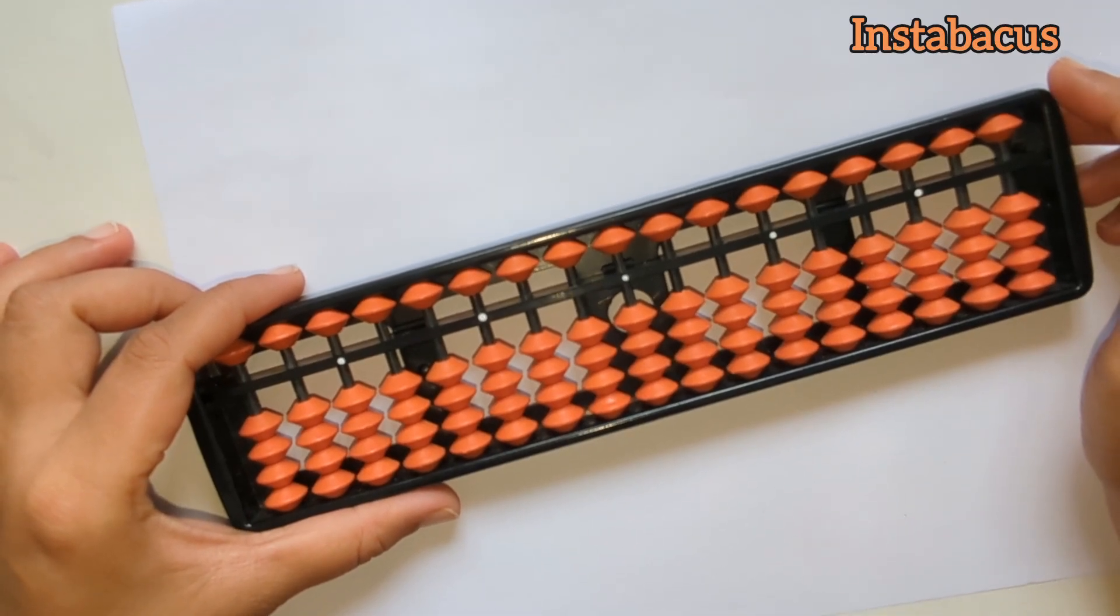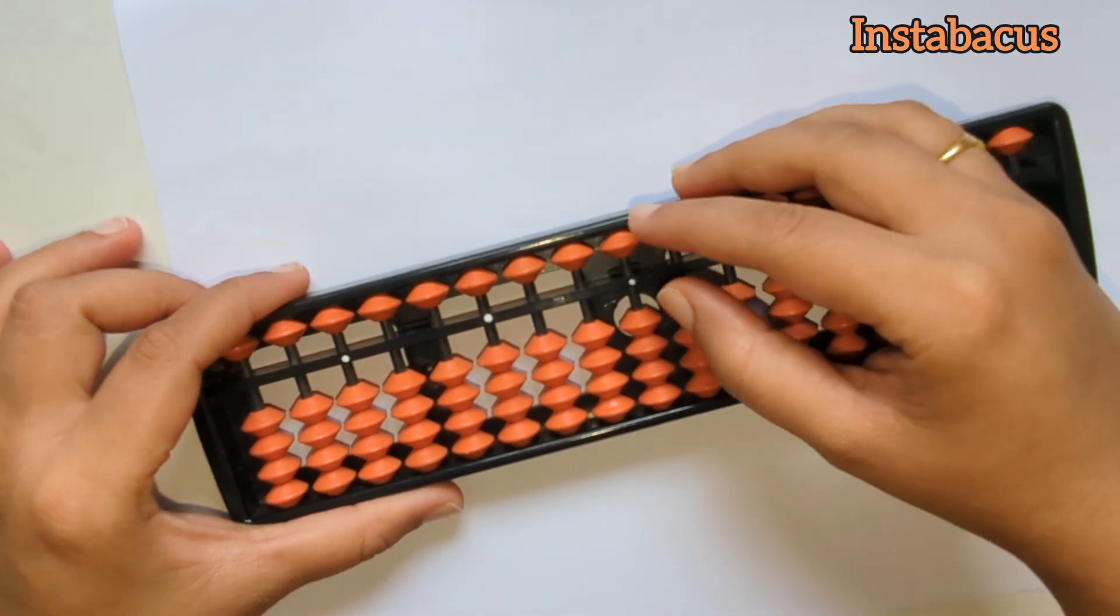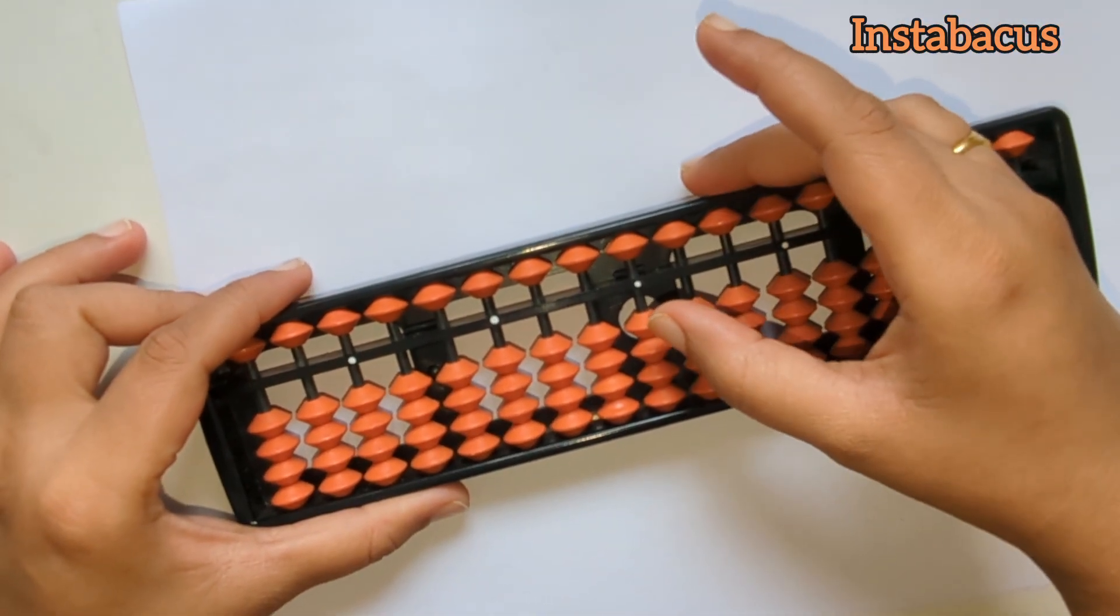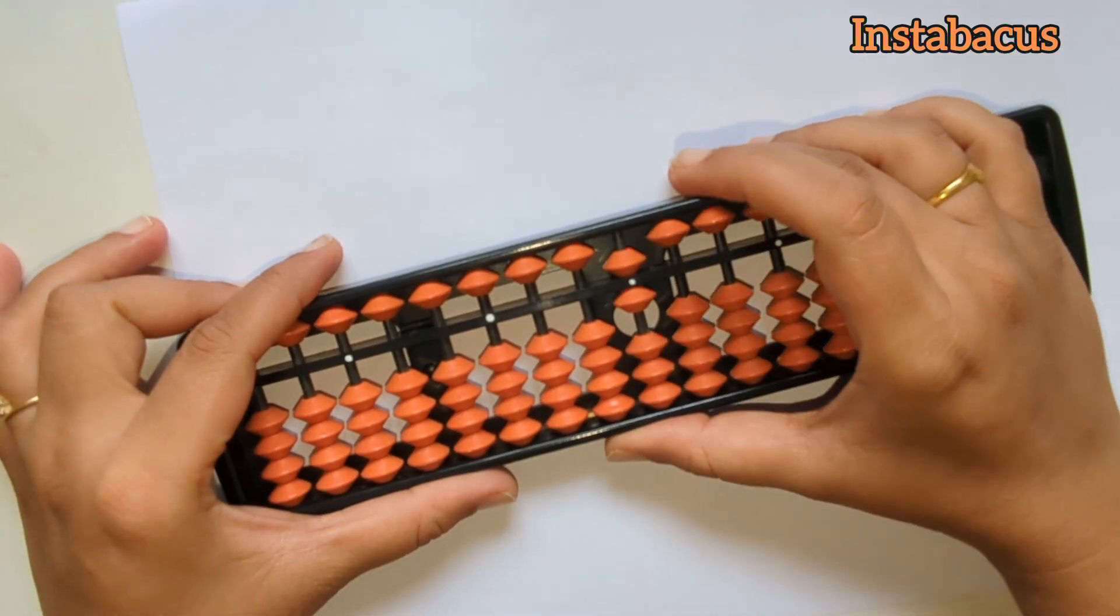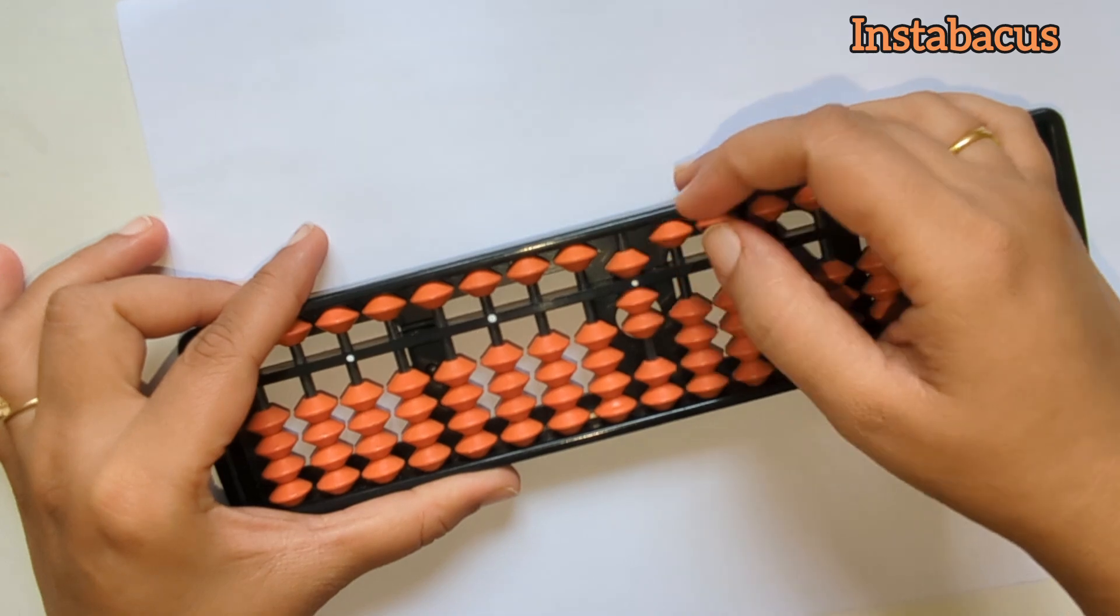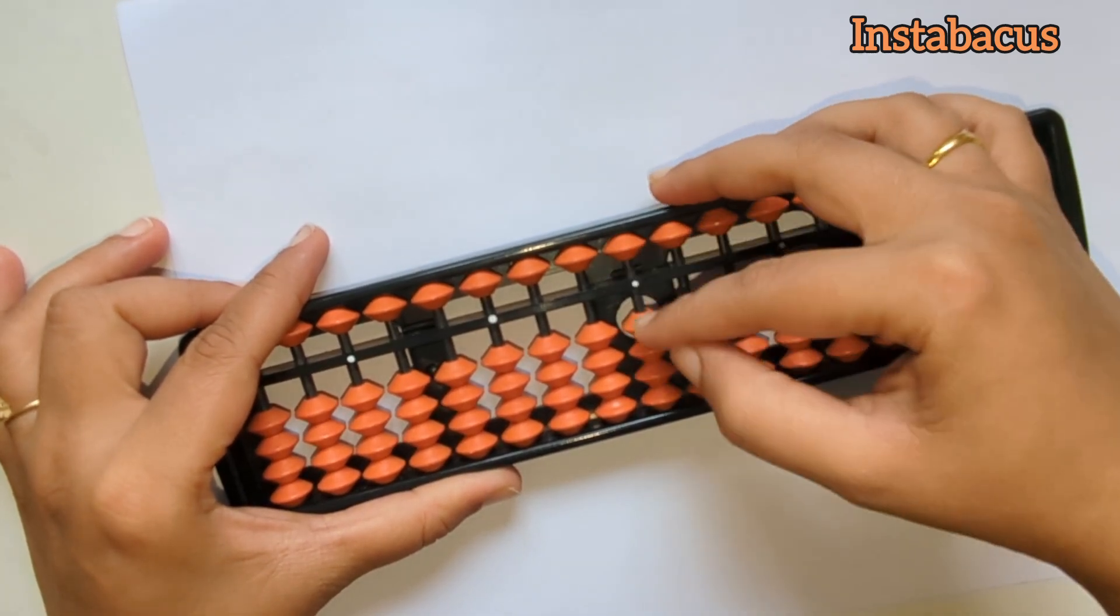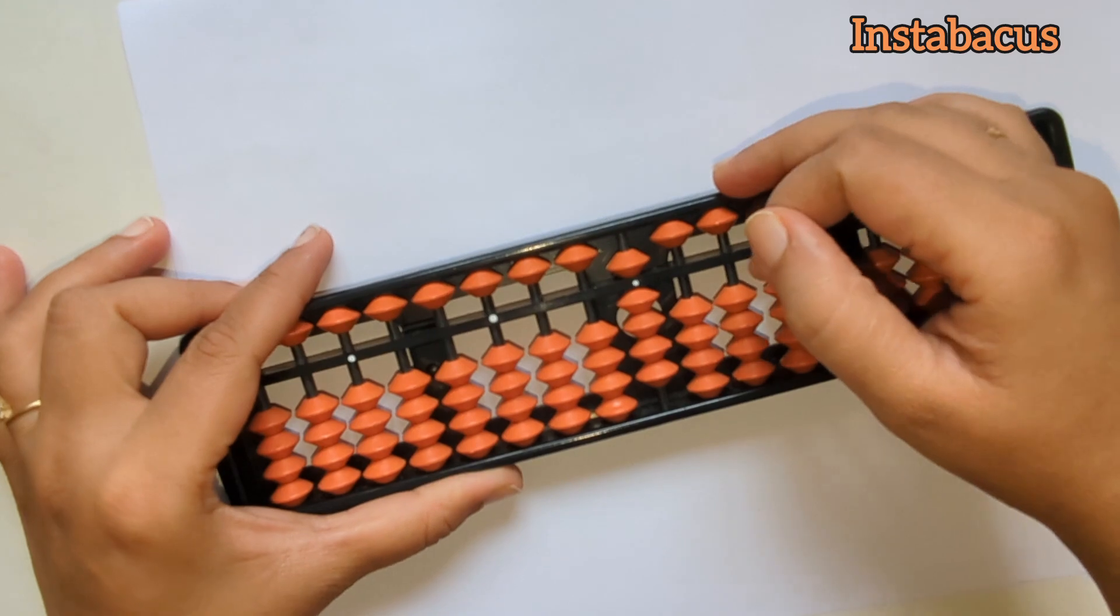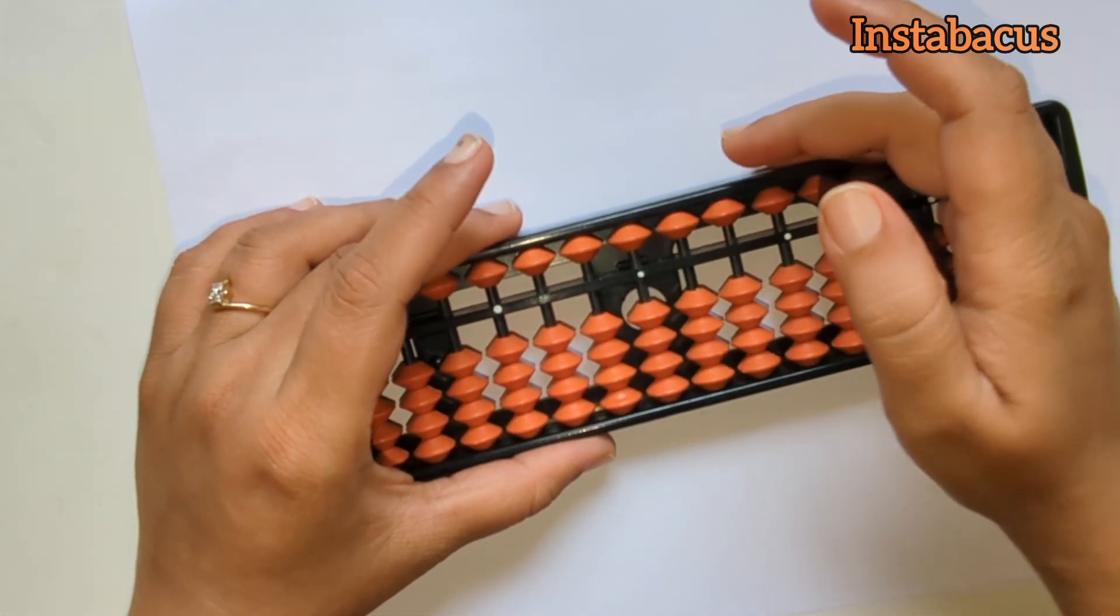So let's start with today's video. Let's add five to one. This is one on abacus, and plus five it becomes six. Easy, isn't it? Let's go ahead and add it to two: two plus five, that is seven. Three plus five, that is eight. Four plus five, that is nine. And here onwards it becomes a little tricky.